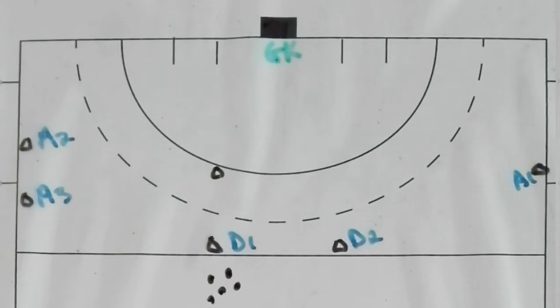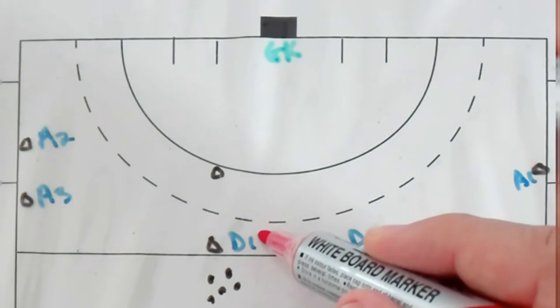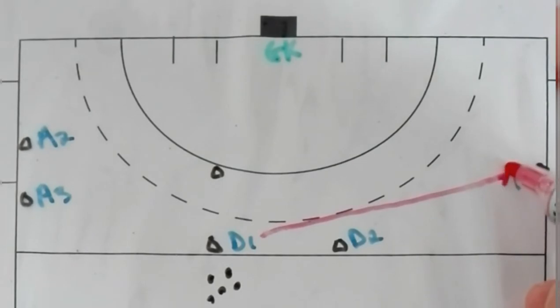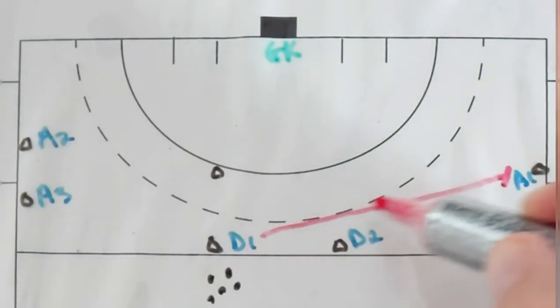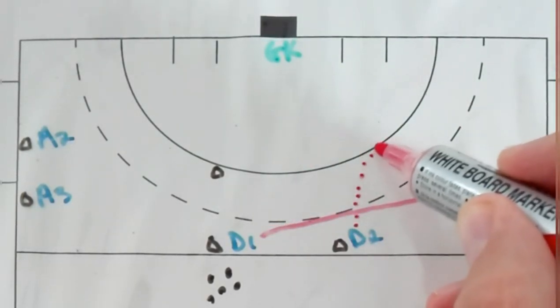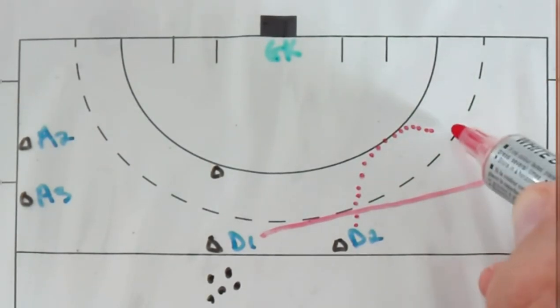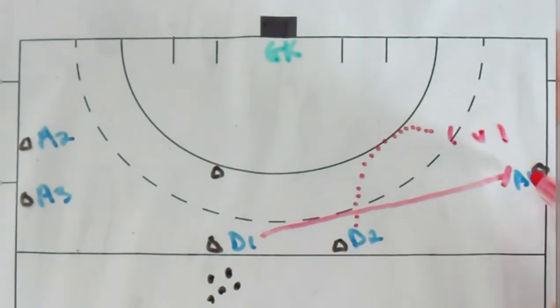So how it will work is defender number one will pass the ball to attacker number one. Attacker number one will receive it. As soon as this ball goes, defender number two will run into this position and now it will become a 1v1 between these two. After this is played out,